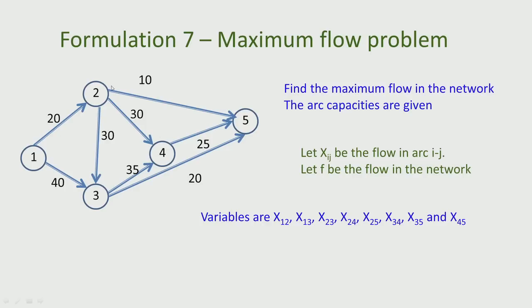With this we start defining the formulation for the maximum flow problem. Let x_ij be the amount of flow in the arc from i to j. There is an arc from 1 to 2, therefore there is x_12; there is an arc from 1 to 3, therefore there is x_13; there is no arc connecting 1 and 4, so there is no x_14. We will have as many variables as the number of arcs in this network. We also define F as the flow in the network, which we try to maximize.